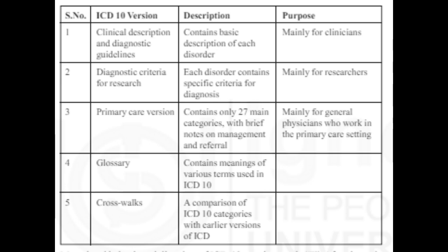To provide an example, F32.11 denotes a moderate depressive episode with somatic syndrome. This would mean: F = Mental and Behavioral Disorders; 3 = Mood (Affective) Disorders; 2 = Depressive Episode; .1 = Moderate Depressive Episode; .11 = Presence of Somatic Syndrome.